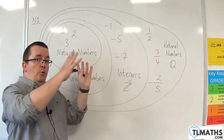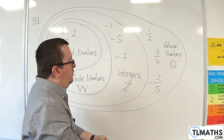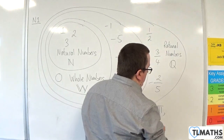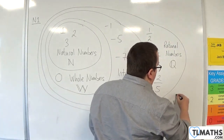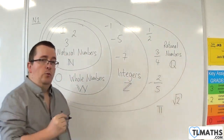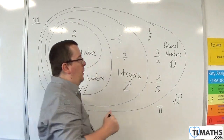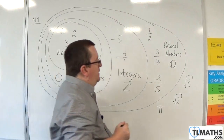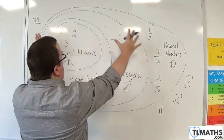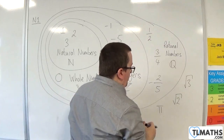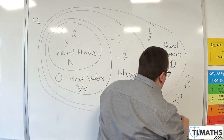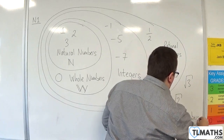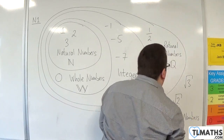If you go one more layer outwards, you get to numbers like pi, and the square root of 2, the square root of 3, and the square root of 5. If you include everything, including all of those, we refer to those as the real numbers, and it uses a double R.